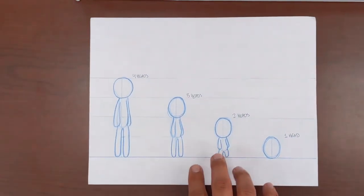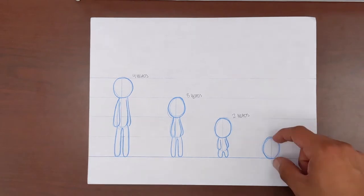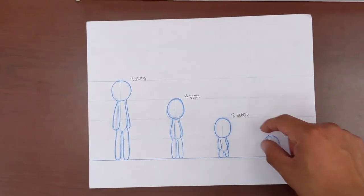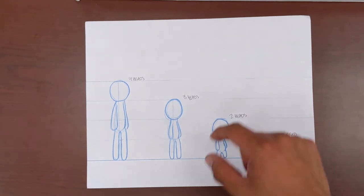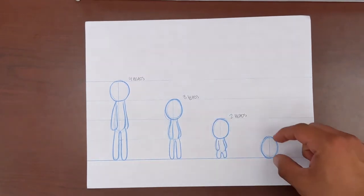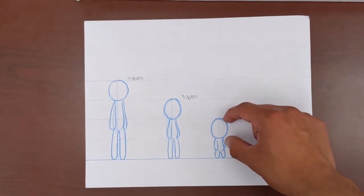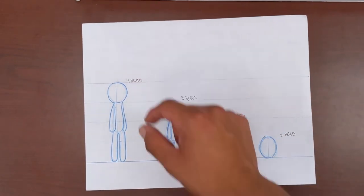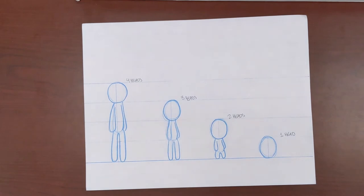When drawing cartoons we can measure the height of our characters in relation to the size of their heads. Here's a quick little chart I drew to help give you an example. You can also think of this as what fraction of our character's entire body is their head. For our character who is four heads tall, their head is one fourth of their overall height. For our character who is only two heads tall, their head is one half of their overall height.